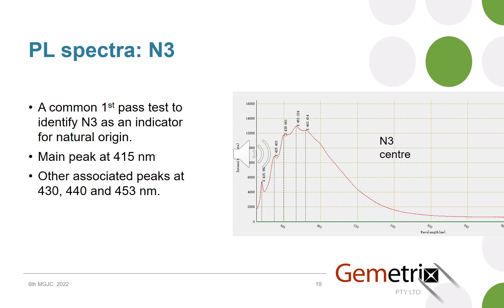If we consider PL spectroscopy first, because it's probably the most useful type when it comes to diamonds, the main feature a researcher or observer will be looking for is an N3 centre, as this is a fingerprint for natural diamonds. It has a main peak at 415 nm, and then associated peaks sitting on top of a broad blue emission, which is what you see when looking at the fluorescence under UV.